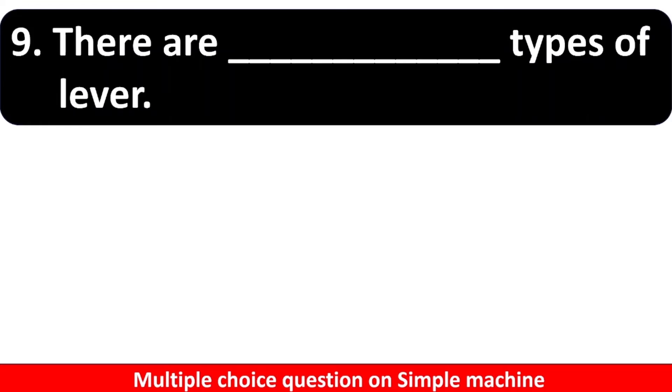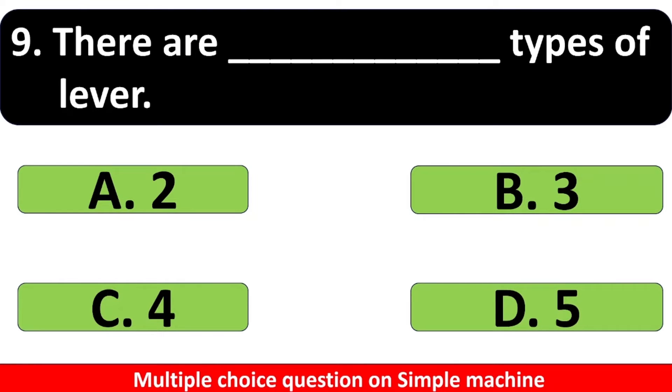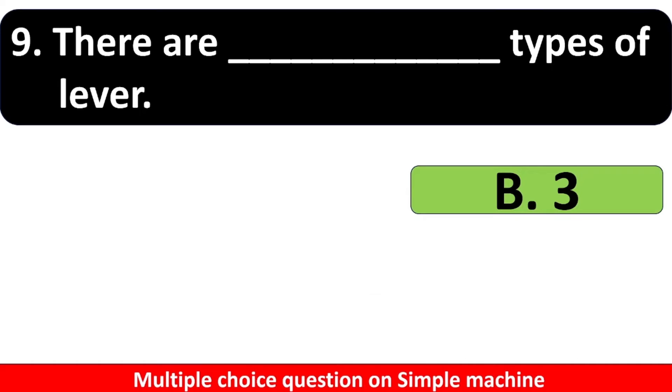There are three types of levers. Your options are: 2, 3, 4, or 9. Your time starts now. And the correct answer is 3. There are three types of levers.